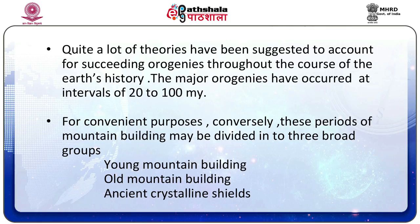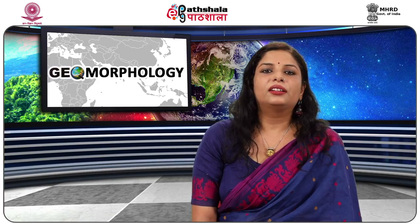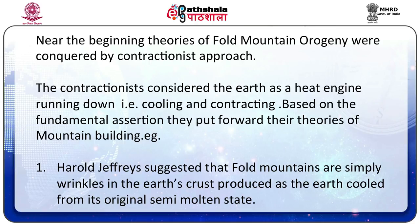Quite a lot of theories have been suggested to account for successive orogenies throughout the course of the earth's history. The major orogenies have occurred at intervals of 20 to 100 million years. These periods of mountain building may be divided into three broad groups: young mountain building, old mountain building, and ancient crystalline shields. Early theories of fold mountain orogeny were considered by a contractionist approach. Contractionists considered the earth as a heat engine cooling and contracting, and based on this fundamental assertion they put forward their theories of mountain building.